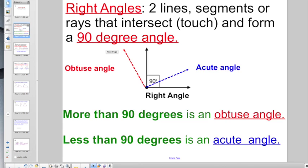So we're going to start off with a bit of review. Remember, right angles, those are two line segments or rays that intersect, which is just another word that means touch, and forms a 90 degree angle. Here is your right angle in black.